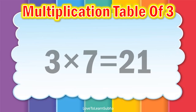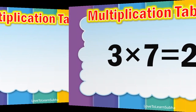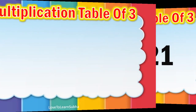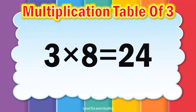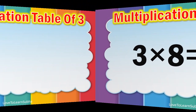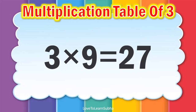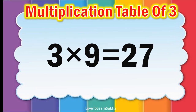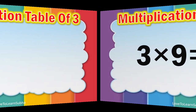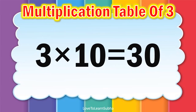3 7s are 21, 3 8s are 24, 3 9s are 27, 3 10s are 30.